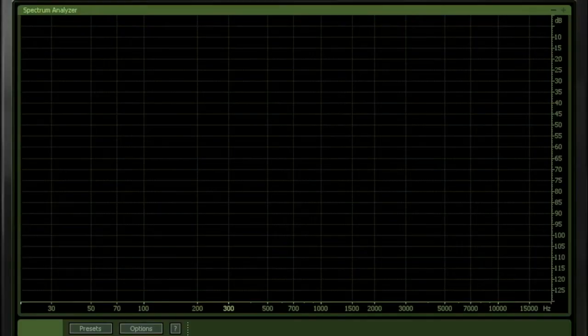Red noise is an even more extreme example of this kind of filtering. With red noise, the energy is concentrated in the bass frequencies and reduces in power at six decibels per octave.